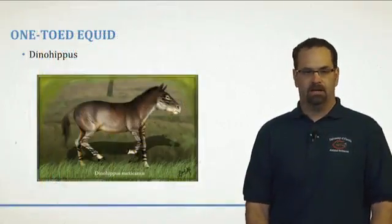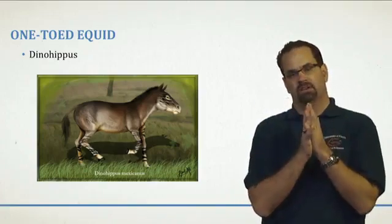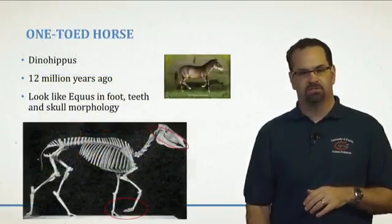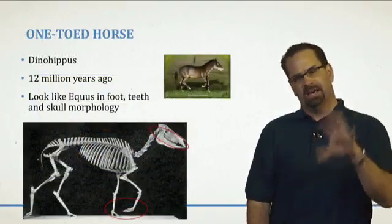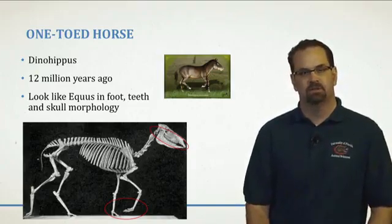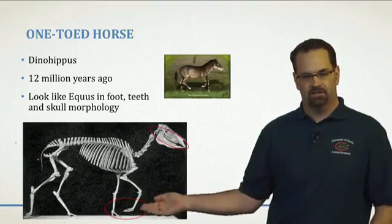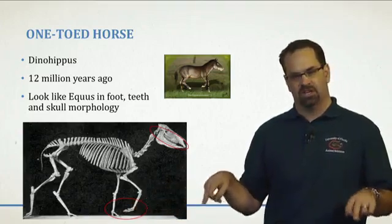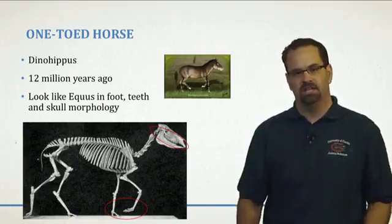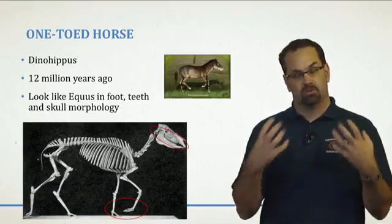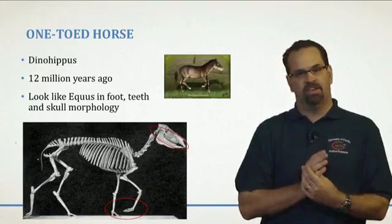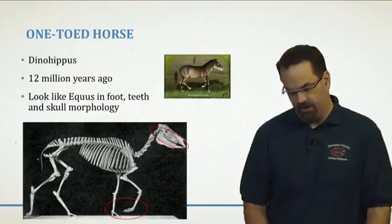Jumping ahead pretty far, we get to Dinohippus, where we start seeing evidence of a single-toed horse — going from three toes to one toe, or one hoof. This is about 12 million years ago. They kind of look like equids, the forerunner of today's modern equids. You can look at the lower leg in this image and see just that hoof, with the two other toes as remnants. The teeth are starting to be grinders, and as their diets changed, their lower legs started to evolve so they could get faster and outrun predators — that's what's driving development in this species.